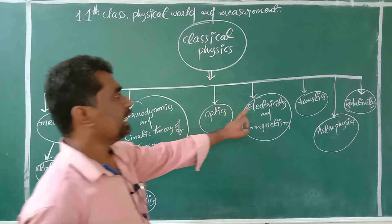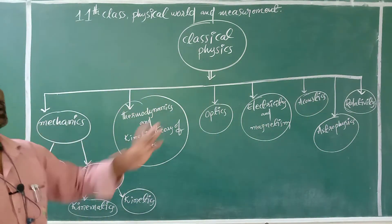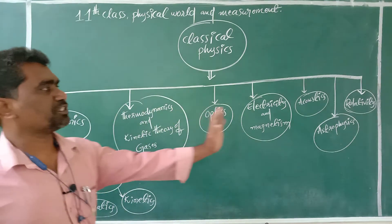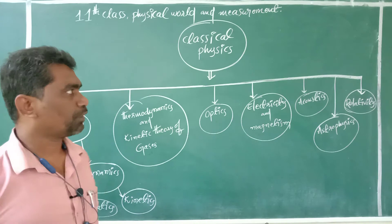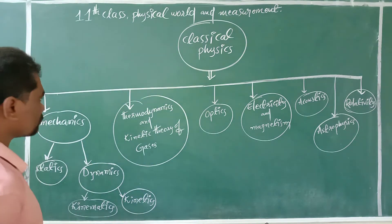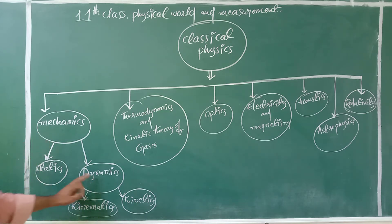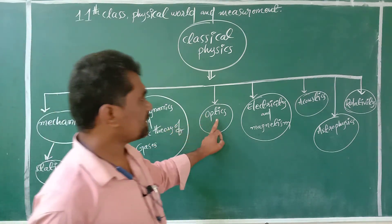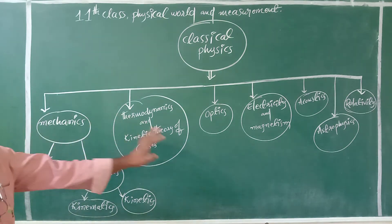What is the definition of mechanics? What is the definition of statics, dynamics, kinematics, kinetics? All the definitions of these topics which come under classical physics will be discussed in our further classes. You can write down that classical physics is divided into these branches: mechanics — which is divided into statics and dynamics, and dynamics into kinematics and kinetics — thermodynamics and kinetic theory of gases, optics, electricity and magnetism, acoustics, astrophysics, and relativity.